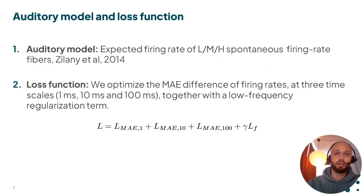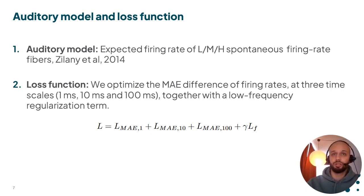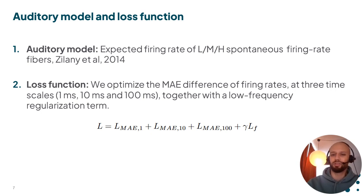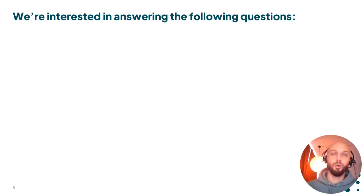In particular, we use the Jilani model that outputs expected firing rates of low, medium, and high spontaneous activity nerve fibers, since they all have different transduction shapes. We assume the spontaneous activity to be identical for the normal and hearing impaired person, and model away the spontaneous firing rate that is not a function of the input stimuli. We use a loss function that computes the mean absolute error between the normal and hearing impaired model at three timescales — 1 millisecond, 10 milliseconds, and 100 milliseconds — together with a small term that penalizes spurious very low frequency drift behavior not captured by the auditory model.